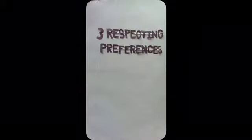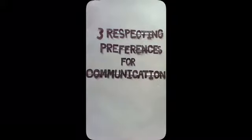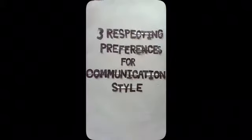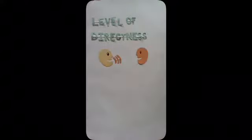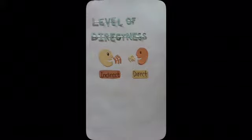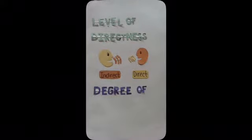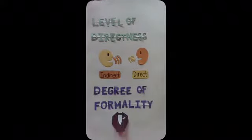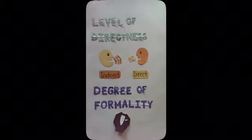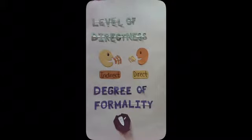Step 3 — respecting preferences for communication style: the level of directness — whether people prefer the direct or indirect method — and the degree of formality varies from culture to culture. Knowing what your partners expect can help you adapt to their style.